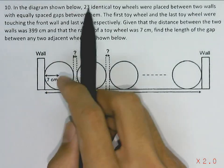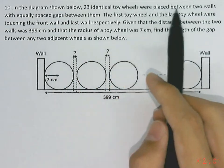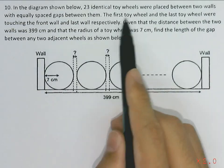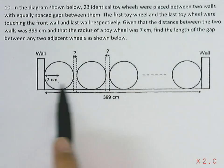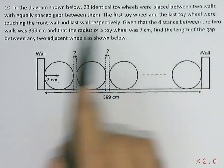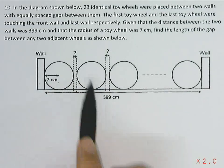In the diagram shown below, 23 identical toy wheels were placed between two walls with equally spaced gaps between them. The first toy wheel and the last toy wheel were touching the front wall and last wall respectively. Given that the distance between the two walls was 399 cm and the radius of a toy wheel was 7 cm.